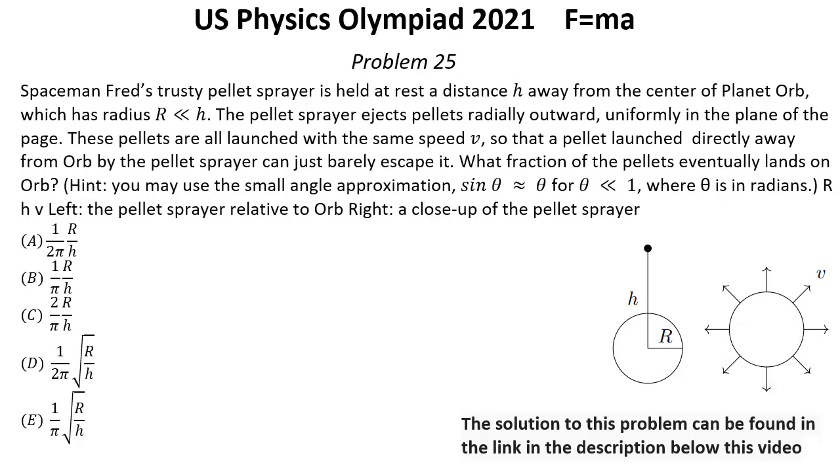The pellet sprayer ejects pellets radially outward, uniformly in the plane of the page. These pellets are all launched with the same speed V so that pellets launched directly away from Orb by the pellet sprayer can just barely escape it.